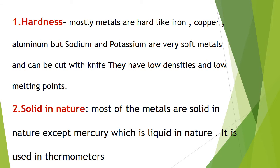The first property is hardness. Most metals that we use in daily life, like iron, copper, and aluminum, are very hard. But some metals are very soft and can be cut with a knife. These have low density and low melting point.